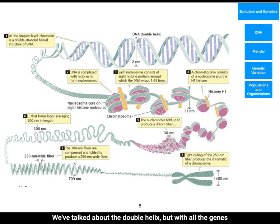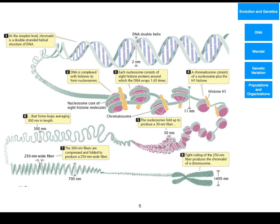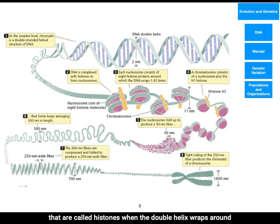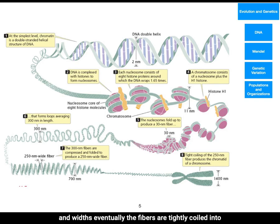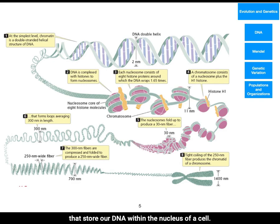We've talked about the double helix, but with all the genes that our cells contain, the double helix isn't small enough to fit in the nucleus of a cell. So the double helix has to wrap around a core of proteins that are called histones. When the double helix wraps around the core of histones, this structure is known as the nucleosome. The nucleosome then folds up to make fibers of varying loops and widths. Eventually, the fibers are tightly coiled into the chromatid — one arm of a chromosome. It is these chromosomes that store our DNA within the nucleus of a cell.